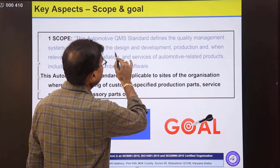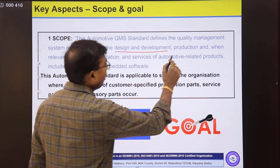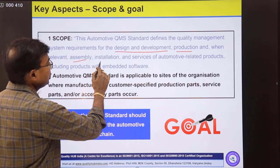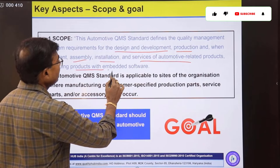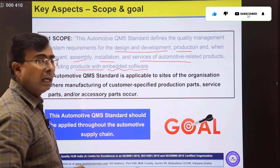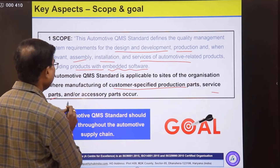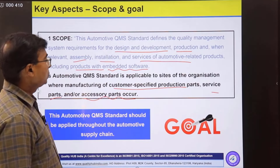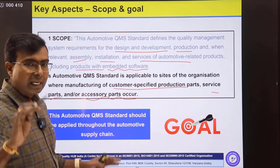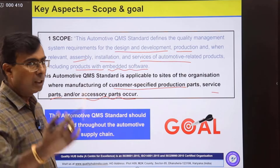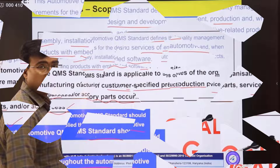The scope of IATF 16949 applies to any organization involved in design and development of any product in the value chain of the automotive industry, or into production, assembly, installation, or services of any automotive-related products. If they are also manufacturing any products with embedded software, it also applies to them. This also applies to organizations manufacturing customer-specified production parts, service parts, or accessory parts. This standard can be applied throughout the automotive supply chain.